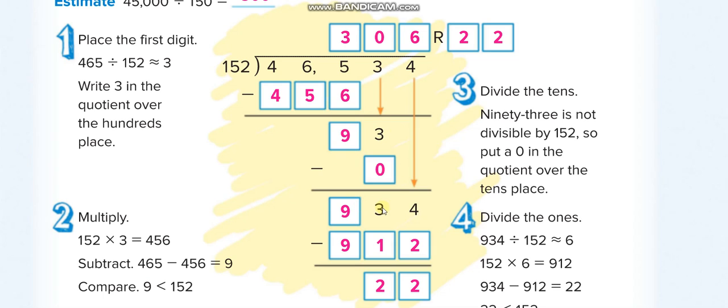So directly, you have 93, you write a 0 and bring this 4 down. Now 152 times 6 is 912. When you minus you get 22, which is less than the divisor. So the quotient is 306, the remainder is 22.